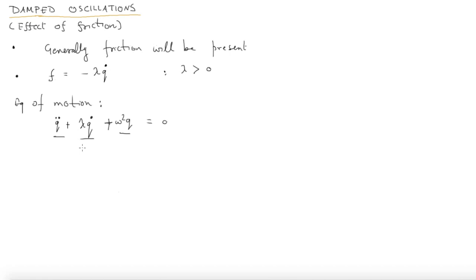We are looking at a one-dimensional system, where q characterizes that one dimension, and later we will take up a multidimensional system. The solution A·cos(ωt + φ) will not work here. If you put it into this equation it will not work, because taking a double derivative gives back cosine, but a single derivative gives a sine — so this form of solution is not going to work.